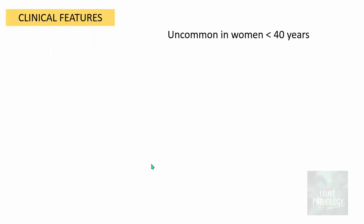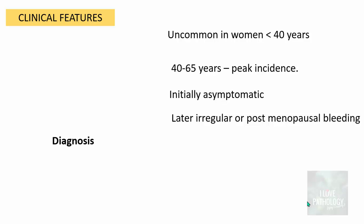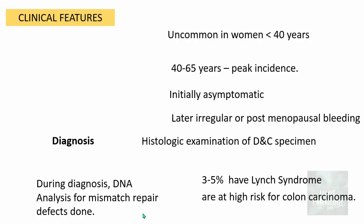Endometrial cancers are uncommon in women under 40 years; peak incidence is 40 to 65 years. Initially patients are often asymptomatic, then present with irregular bleeding or postmenopausal bleeding — postmenopausal bleeding should always raise suspicion for endometrial carcinoma. Diagnosis involves dilatation and curettage with histopathological examination of the endometrial sample. DNA analysis is also done to identify mismatch repair defects, as 3 to 5% of cases are associated with Lynch syndrome — hereditary non-polyposis colorectal cancer syndrome — indicating high risk for colon carcinoma as well.